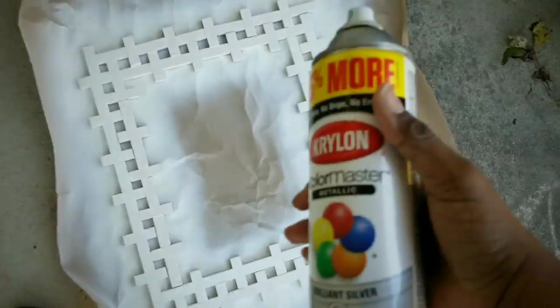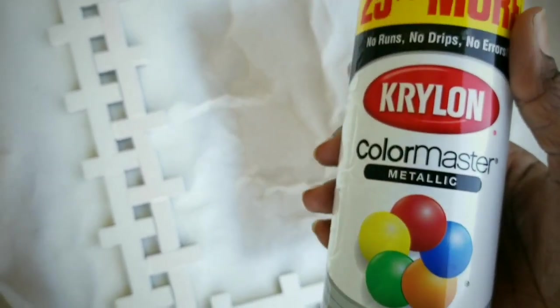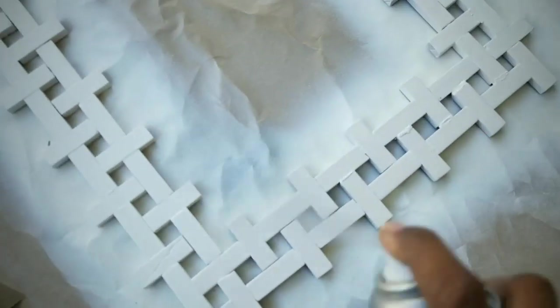Once the primer is dry, we can apply the color. I will be using this brilliant silver spray paint by Krylon and lightly apply two coats, letting it dry thirty minutes in between each coat.